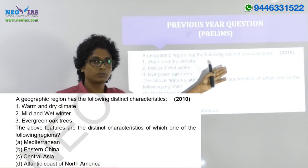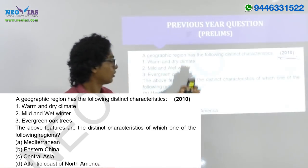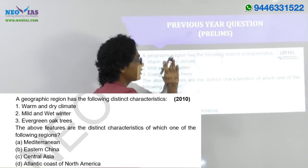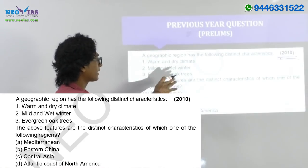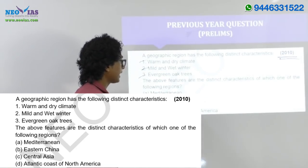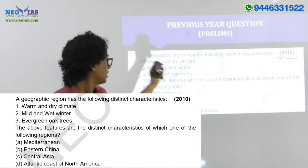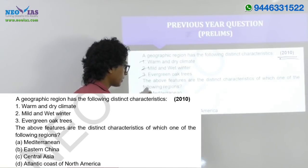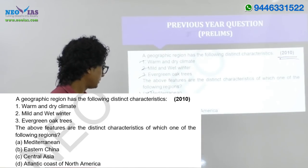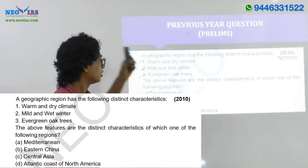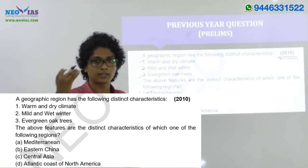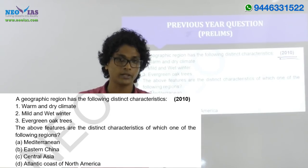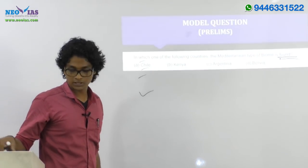Here is a previous year question from this topic — it's from 2010, so not very recent but still important. The question states: 'The geographic region has the following distinct characteristics: warm and dry climate, mild and wet winter, and evergreen oak trees.' Wherever you see the term wet winter or winter rainfall, it is related with the Mediterranean climate. The answer is Mediterranean region. It is an ABCD question where different characteristics are given and you must find which climatic region suits them.